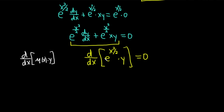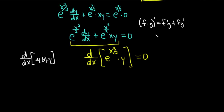Whatever your μ(x) is, you put that here — in our case it was e to the x squared over two — and your unknown function. Let's check that this is true. To check we should take the derivative of this. Recall the product rule: if you have a function f multiplied by a function g, think of f as your first function and g as your second. It's the derivative of the first times the second, plus the first times the derivative of the second.